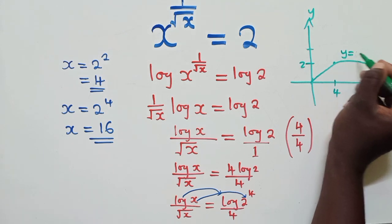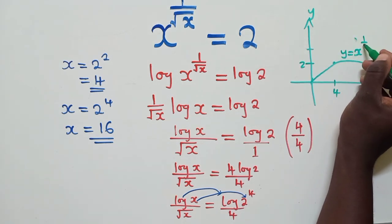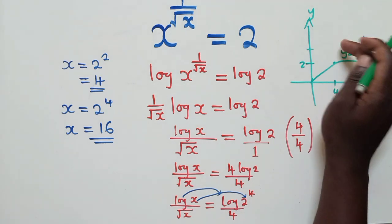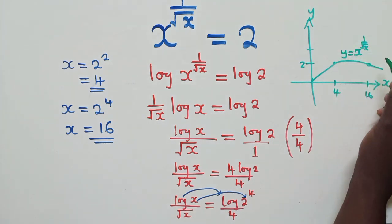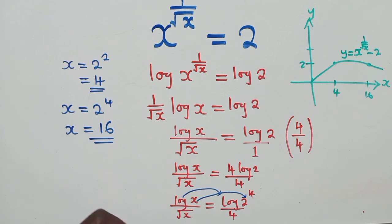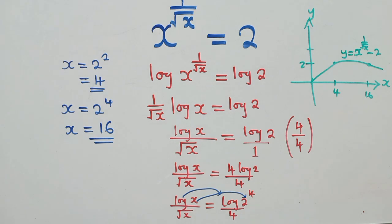The graph is y equals x to the power 1 over root of x, minus 2. When you graph this it confirms the two solutions. Thank you for watching, remember to subscribe — this has been See You, See Chamber Jacob, bye bye.